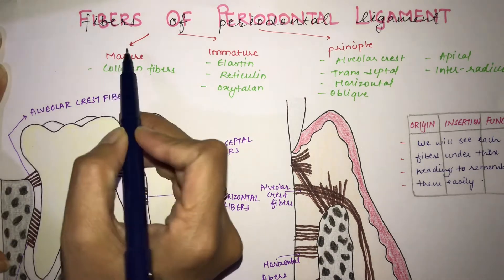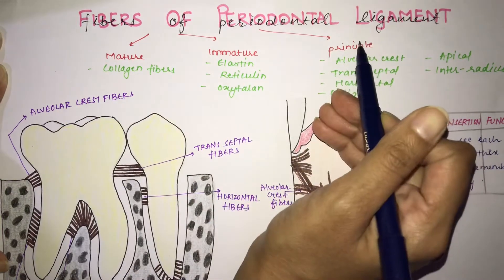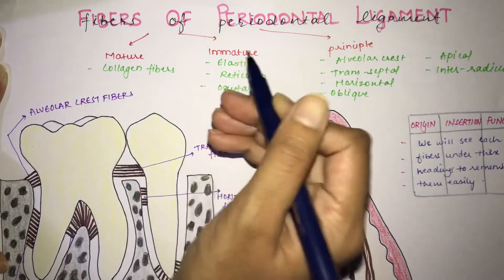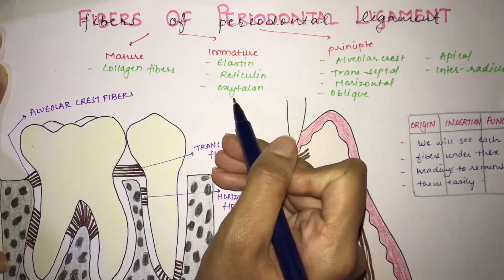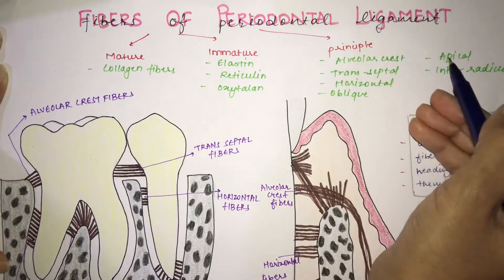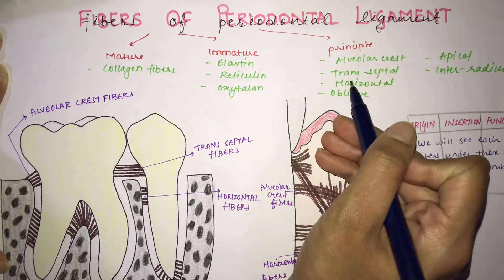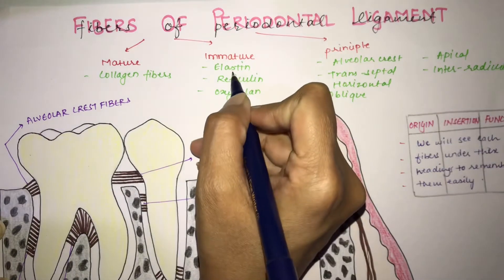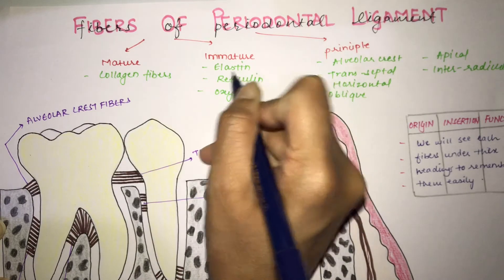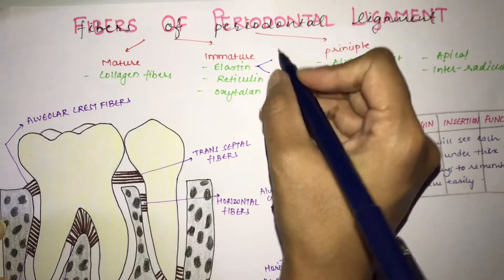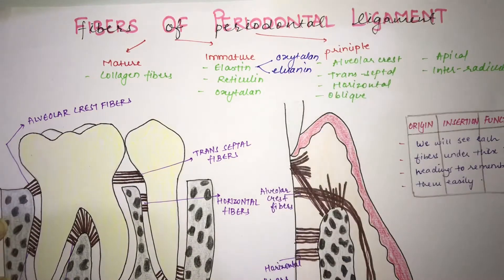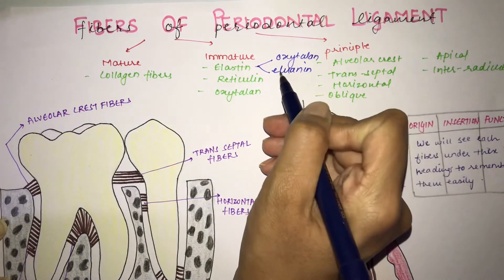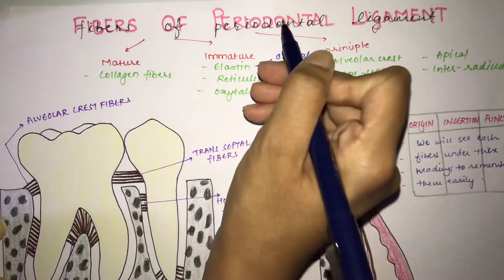The periodontal ligament contains various fibers: mature fibers, immature fibers, and principal fibers. In mature fibers, you have collagen fiber. In immature fibers, you have three: elastin, reticulin, and oxytalin. In principal fibers, you have six: transseptal, horizontal, oblique, apical, and interradicular. In the PDL, you do not have mature elastin; instead you have two forms — oxytalin and ileonin.